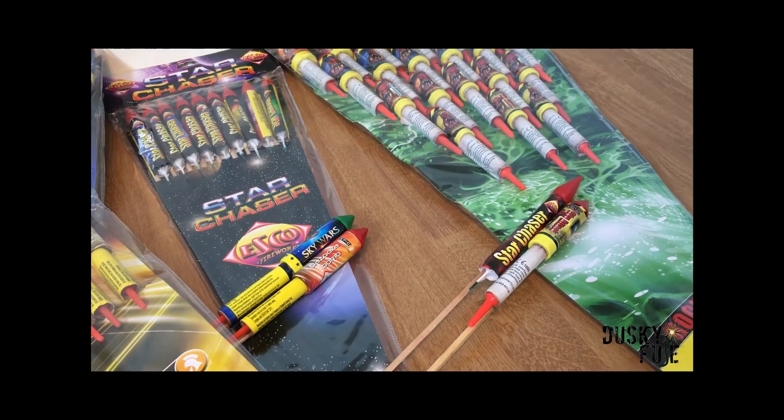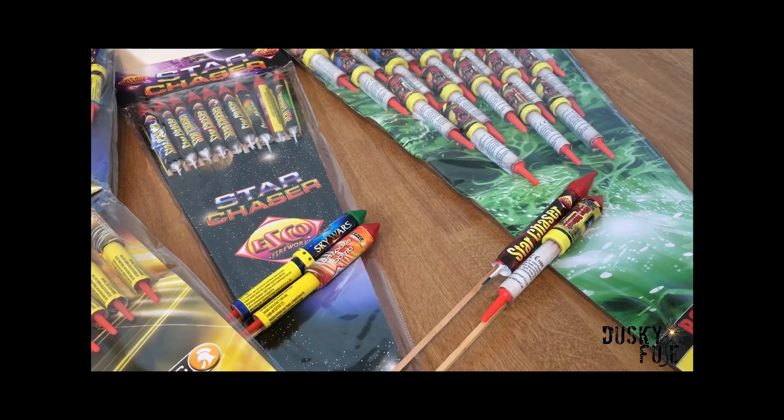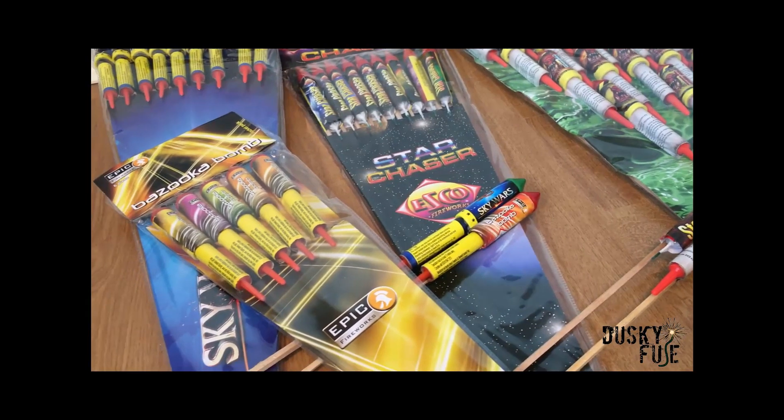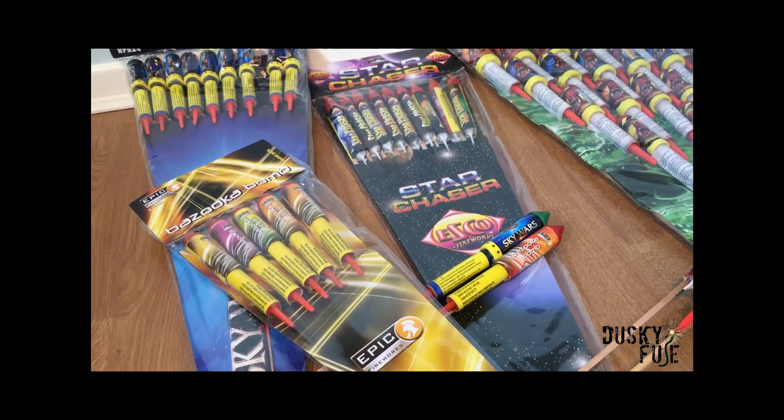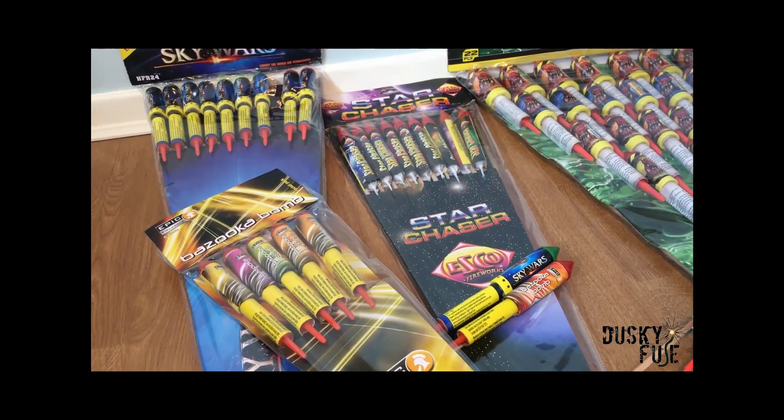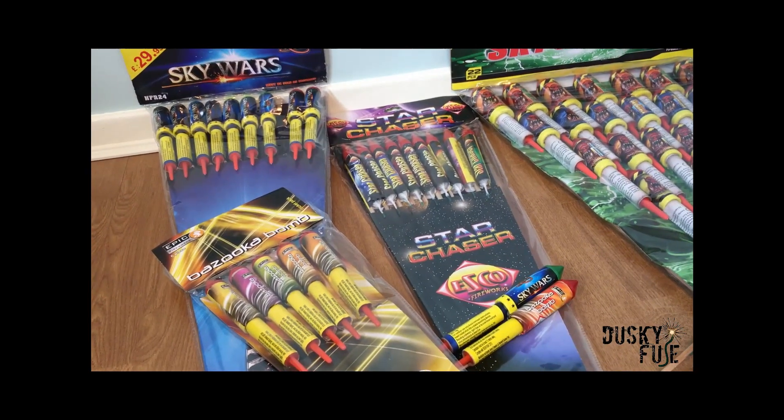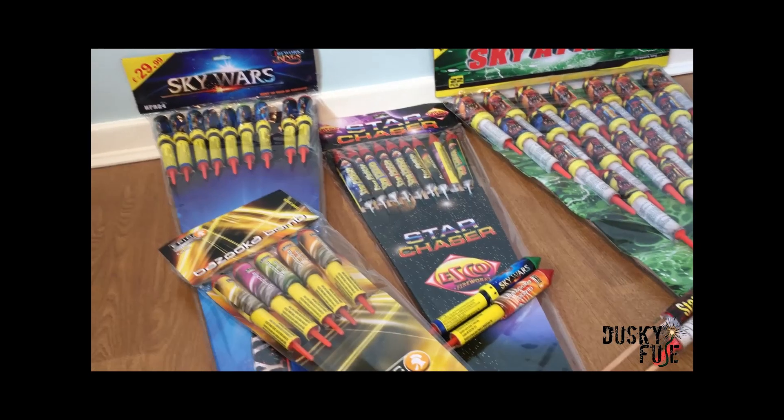To make matters worse, only 5% of this powder can be flash. So in the best case scenario a 1.4G rocket will only ever have a maximum of 1 gram of flash. Whereas a 1.3G rocket can have up to 10 times the powder and up to 40 times the amount of flash.